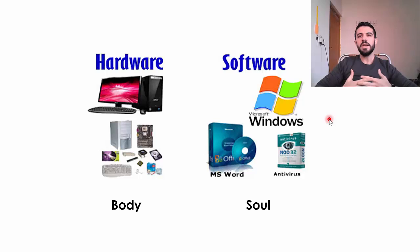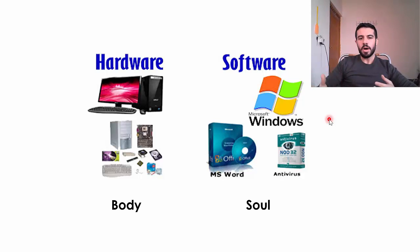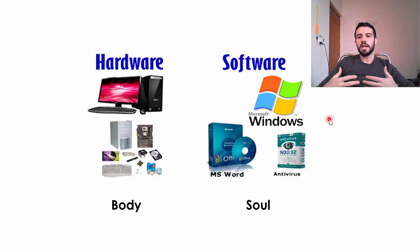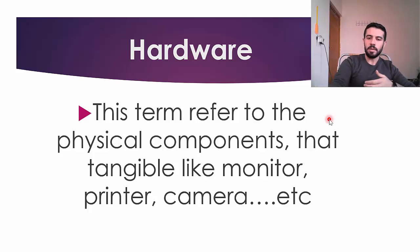Hardware refers to any physical, tangible device — things you can touch, like a laptop, keyboard, mouse, RAM, CPU, case, monitor — anything physical inside or outside the computer. Software is anything you cannot touch, like Windows, Word, or any application inside the computer.